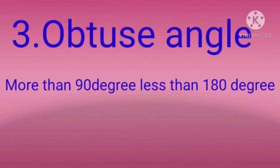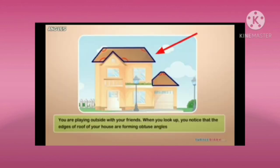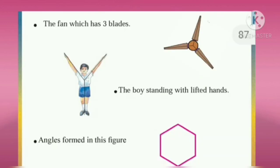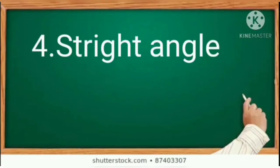Examples. Look at the edges of the roofs of our houses are forming obtuse angle. On the fan which has three blades, in that also we can see the obtuse angles. The boy standing with the lifted hands, in between the lifted hands we can see the obtuse angles. And angles formed in this figure also we can see the obtuse angle.